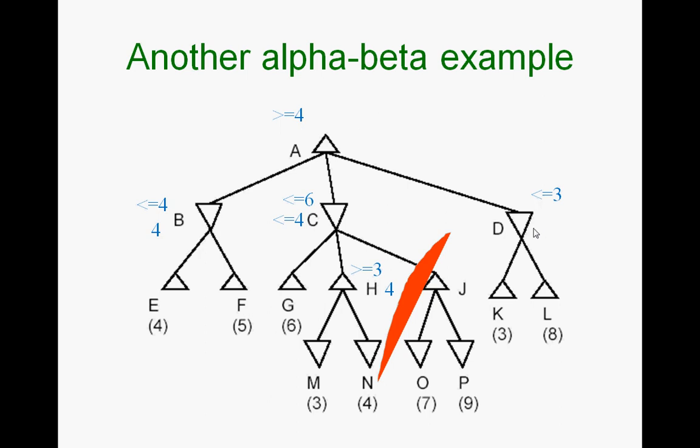You stop there. At this point, whatever is the current bound of A becomes its backed-up value, so A's actual backed-up value is 4. That 4 is really coming from here, from E.